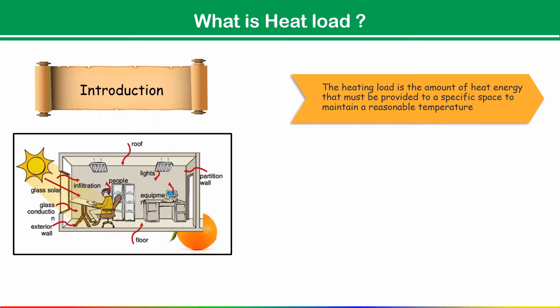As per ASHRAE — the American Society of Heating, Refrigeration Institute — for human comfort we have to maintain 20 ± 2°C, or 22 ± 2°C, and in Fahrenheit 74 ± 2°F. Within these ranges we have to maintain the temperature for human comfort. This is our main target.